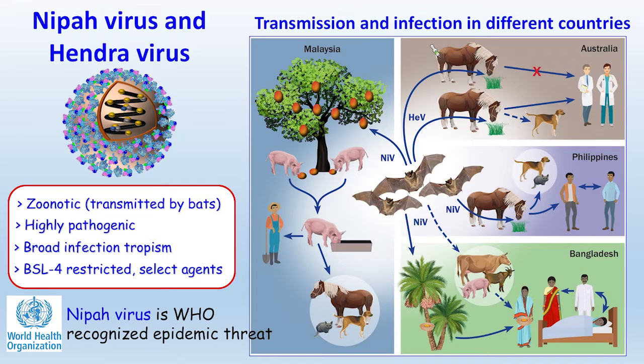Nipah virus and Hendra virus are bat-borne, highly pathogenic paramyxoviruses that can infect a wide range of animals, including people. That includes livestock and several other species of animals that actually serve as animal models of infection. The transmission of these viruses occurs because their natural hosts in nature are several species of fruit bats.